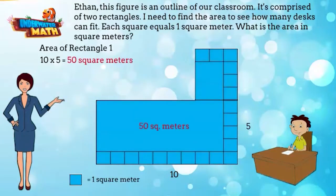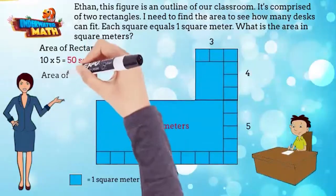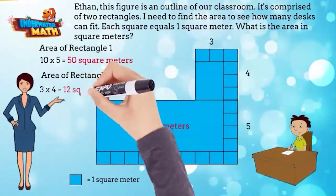The length of rectangle 2 is 3 and the width is 4. The area of rectangle 2 is 3 times 4 equals 12 square meters.